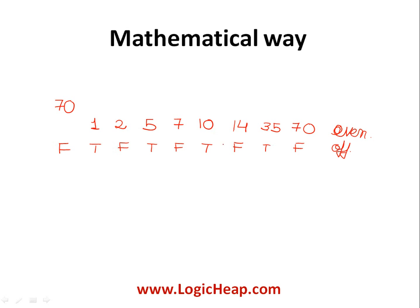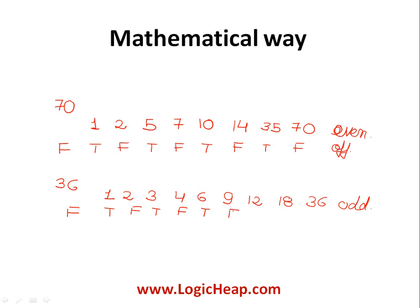Now consider 36. The divisors of 36 are: 1, 2, 3, 4, 6, 9, 12, 18, and 36 — that is 9 divisors, which is an odd number. Initially bulb 36 was off. Toggling for each divisor: true, false, true, false, true, false, true, false, true — so finally it is on. After 100 passes, bulb 36 is on because it has an odd number of divisors.